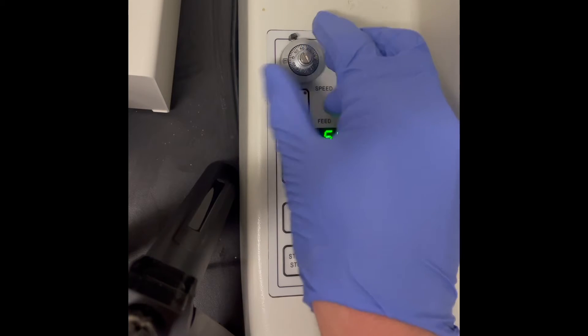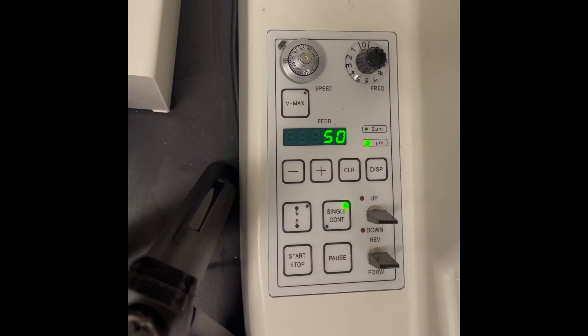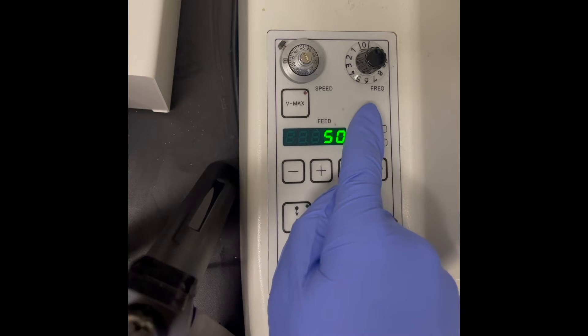It's okay to start at a faster speed, but if you notice small tears or ripples in the tissue as you're sectioning, turn that speed down.